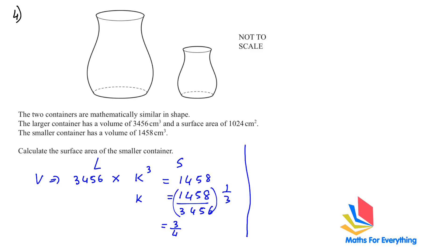Now the larger container has a surface area of 1024 square centimeters and we want to find the surface area of the smaller container. Whenever you want to find area, you square the scale factor. So 1024 multiplied by (3/4) squared gives the area of the smaller container, which is 576 square centimeters.